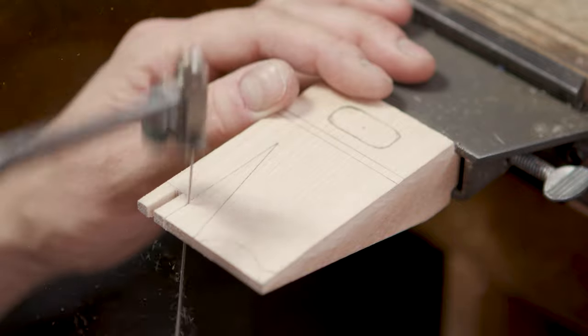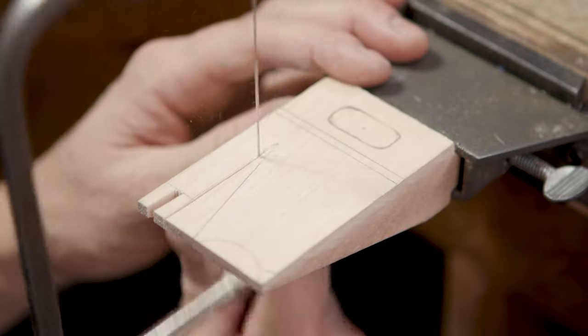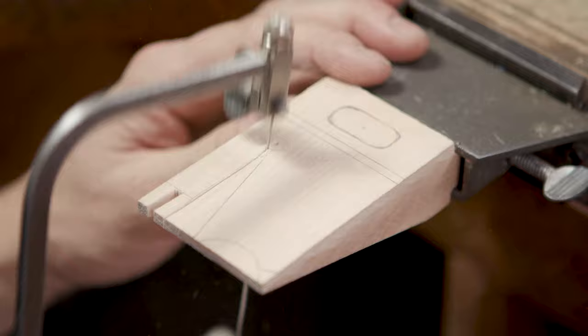Now I'm sawing out the wedge section that I use for holding sheet while piercing.